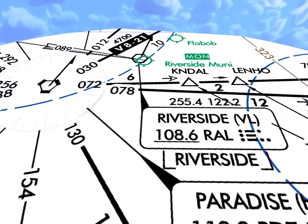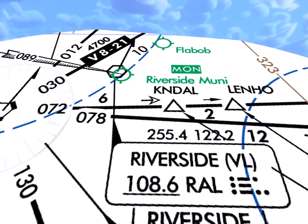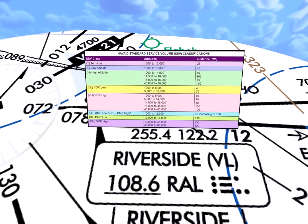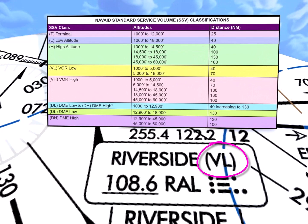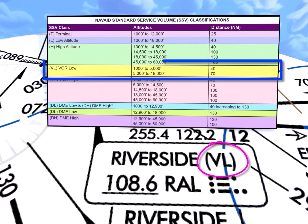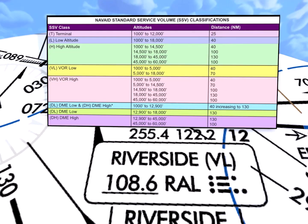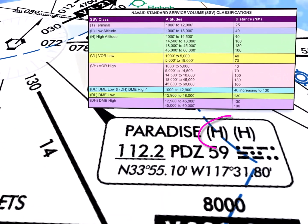Its SSV is identified as VL, meaning that at an altitude between 1,000 and 5,000 feet above the transmitter height — essentially an AGL value — it is usable at altitudes as shown in the accompanying graphic.